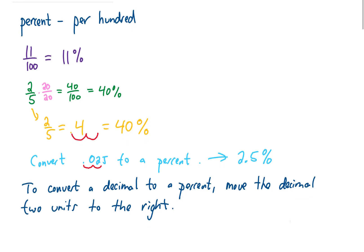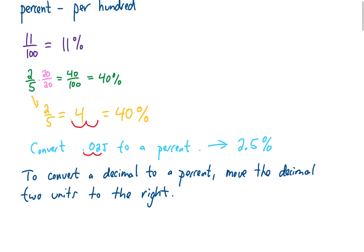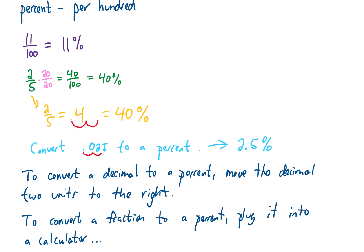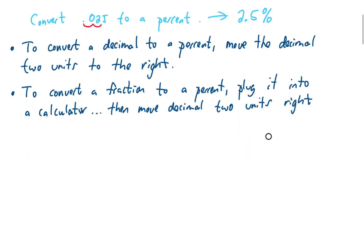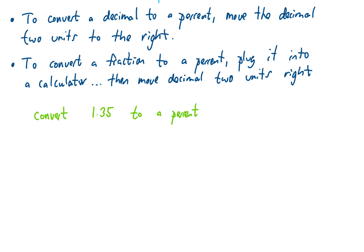If we want to convert a fraction into a percent, we can just plug it into our calculator. The calculator converts that fraction into a decimal, and then we take that decimal and convert it into a percent by moving the decimal place two units to the right. For example, to convert 1.35 to a percent, we take that decimal place and move it two units to the right, giving us 135%.